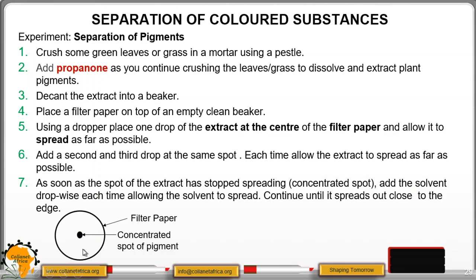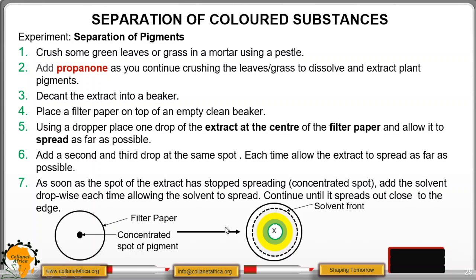We have the filter paper here. We place it on a clean, empty beaker. Then you put a concentrated spot of the pigment. Then you add the moving solvent, which is propanol, and as you do that, it will spread out and form the solvent front.